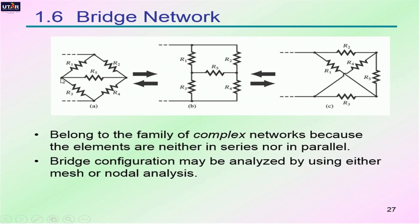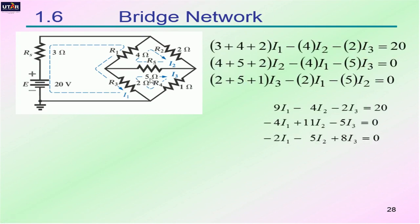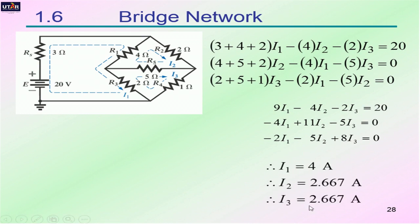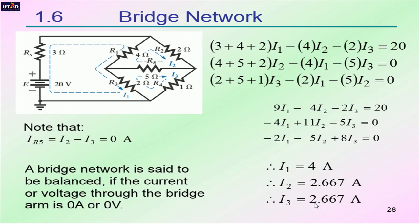When we find a resistor between two branches, we refer to this as a bridge network. This kind of circuit can usually be solved using either mesh analysis or nodal analysis. For example, this circuit has three meshes, giving three sets of equations with three variables. By the substitution method, we find I1 equals 4 ampere, I2 equals 2.667 ampere, and I3 equals 2.667 ampere. A bridge network is said to be balanced if the current or voltage through the bridge arm is 0 ampere or 0 watt.